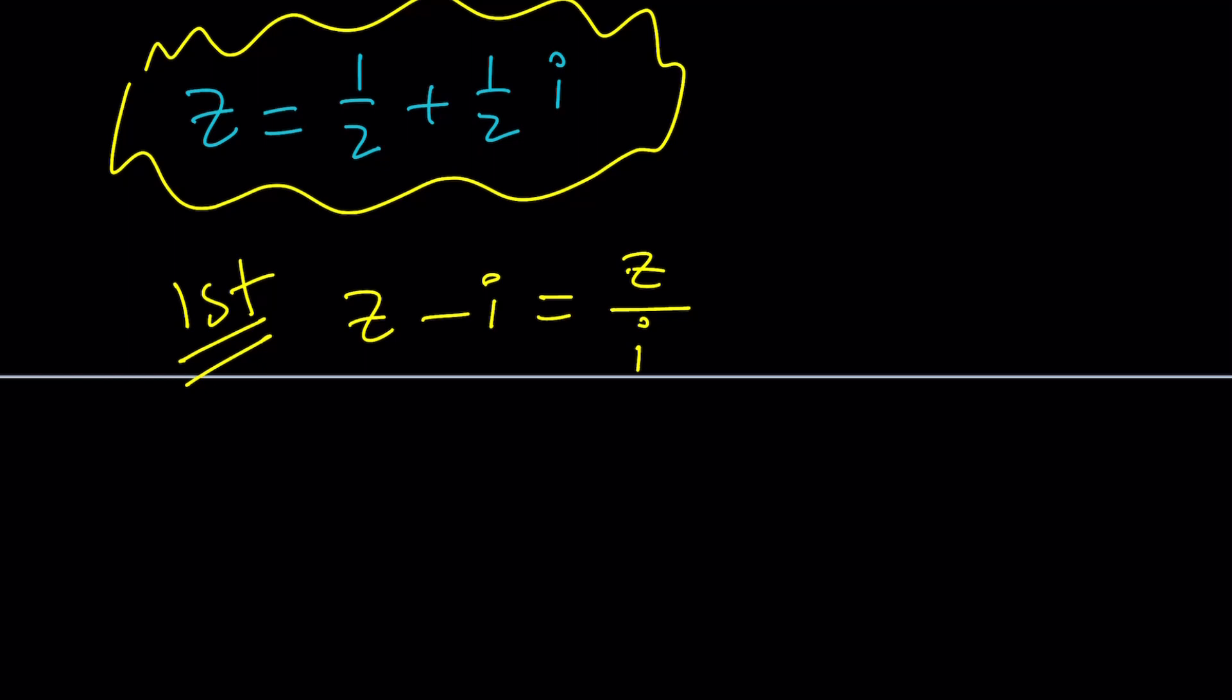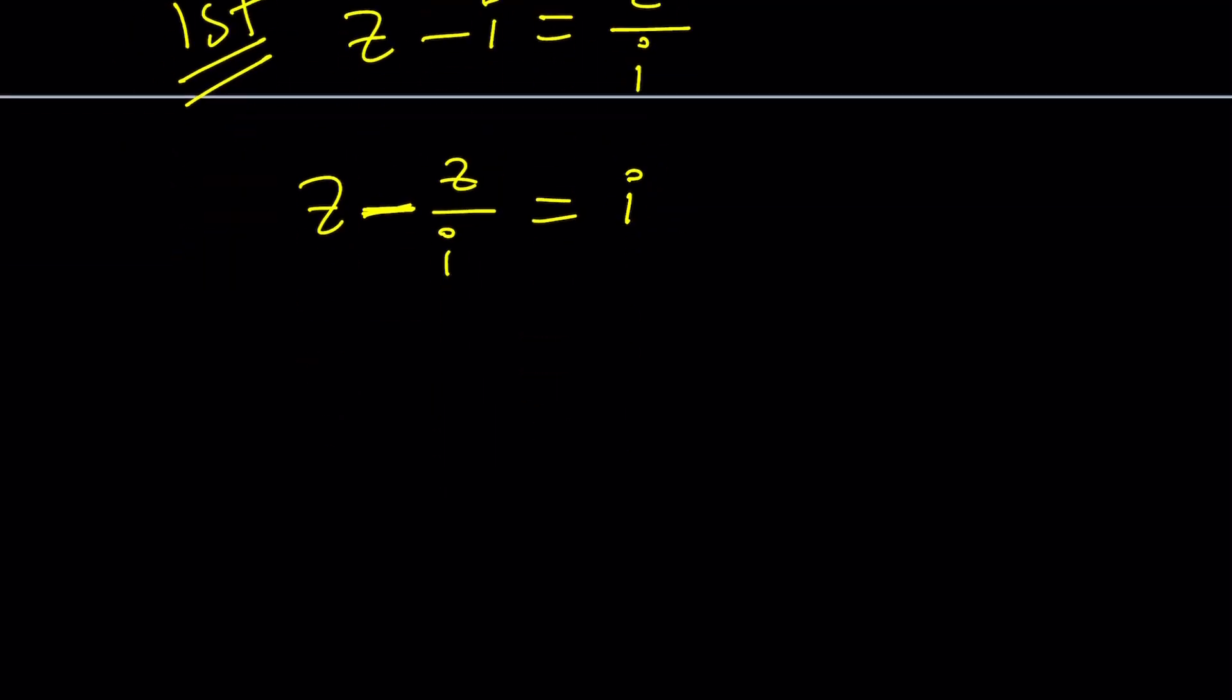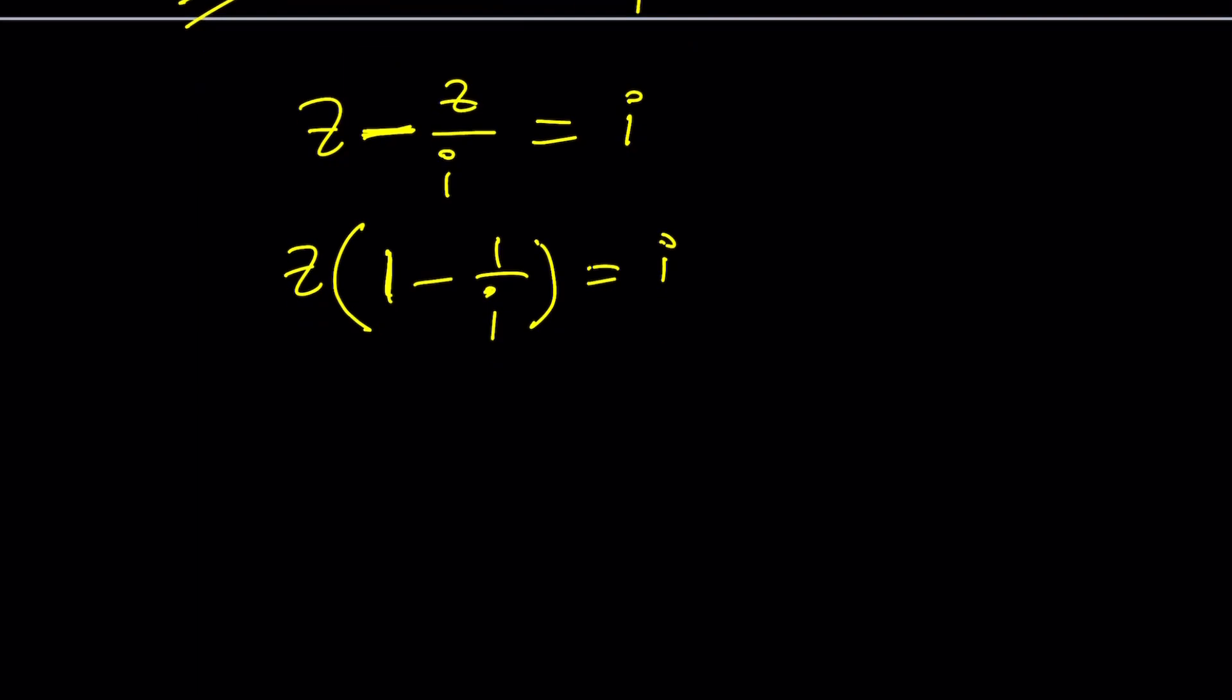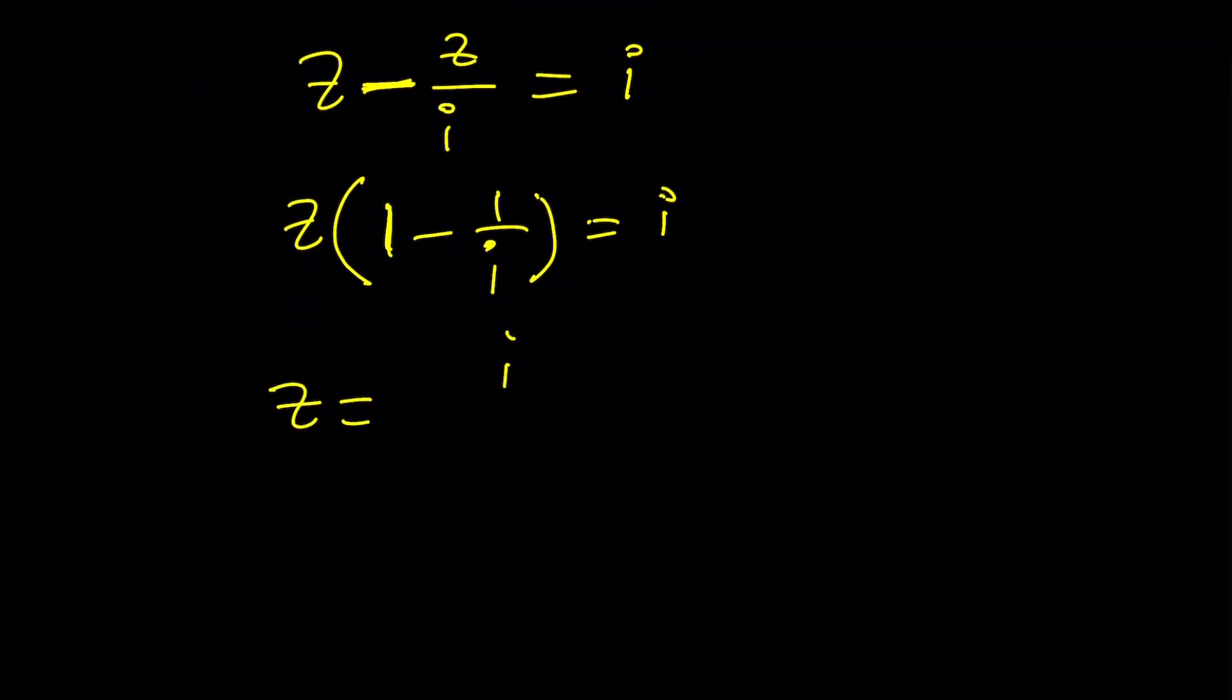So the first method basically relies upon factoring. Let's put Z over I here and put the I on the right-hand side, and then factor out the Z. You could also make a common denominator and then factor out the same thing. And this gives us 1 minus 1 over I equals I. And then to find Z, you need to divide both sides by 1 minus 1 over I.